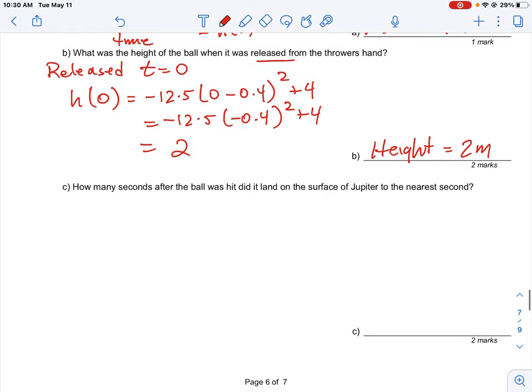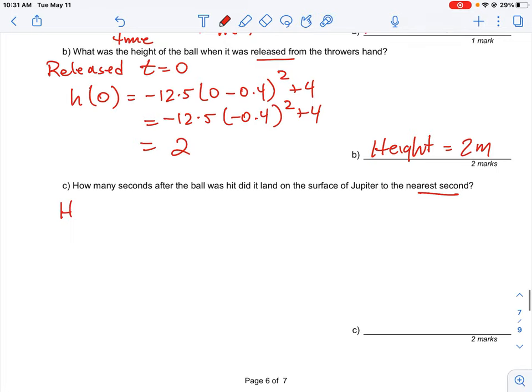And then the third question says, how many seconds after the ball was hit did it land on the surface of Jupiter to the nearest second? So this means the ball was hit, it rises, and then eventually it falls back to the ground. So what does that correspond to in the equation? What we're really looking at here is we're looking to know what is the time when the height of the ball goes back to being 0, or in this case h(t) equals 0. So essentially we're just setting the equation to be equal to 0 and then solving for the value of t.